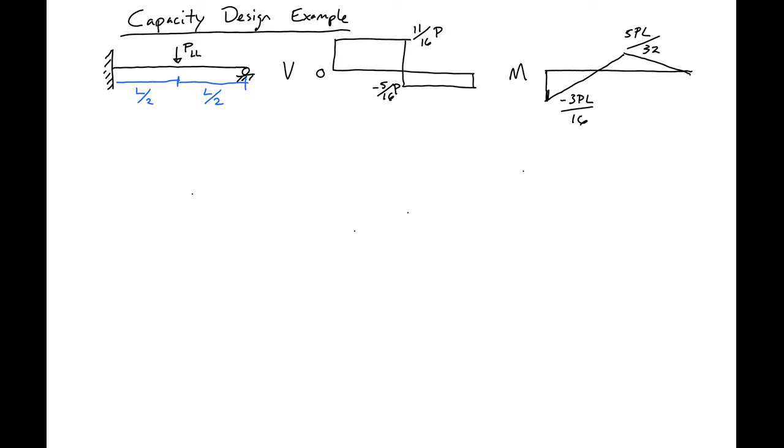In this example we're going to look at a capacity design example. The first thing in capacity design that we need to do is we need to select a desired mode of failure.